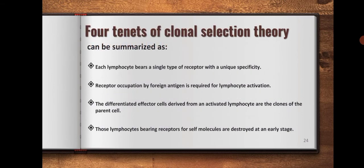Four tenets of clonal selection theory can be summarized as: Each lymphocyte bears a single type of receptor with a unique specificity. Receptor occupation by foreign antigen is required for lymphocyte activation. The differentiated effector cells derived from the activated lymphocytes are the clones of the parent cell. And those lymphocytes bearing receptors for self molecules are destroyed at an early stage.